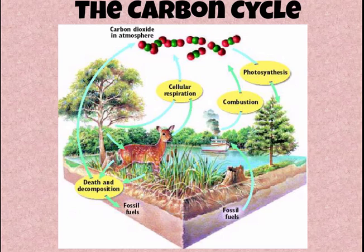Here's a diagram of the carbon cycle, and it has one more important part: combustion. Any time something is burned — a match, a pile of leaves, a rainforest, or fossil fuels — it releases carbon dioxide into the air. So when we burn rainforests or drive cars burning fossil fuels, we're releasing carbon dioxide into the atmosphere.